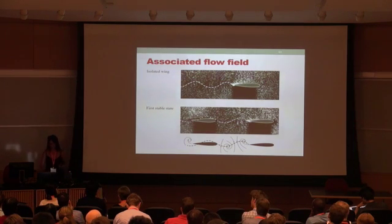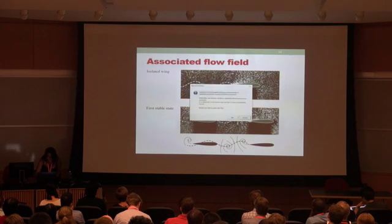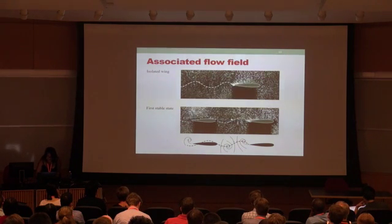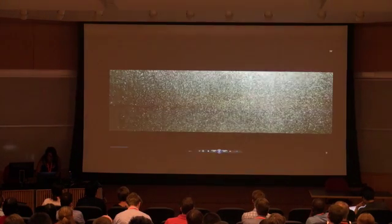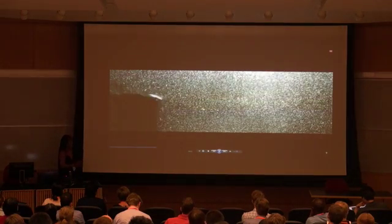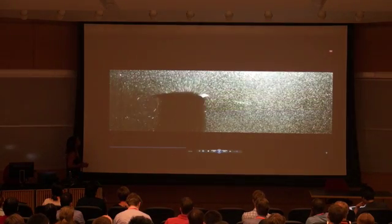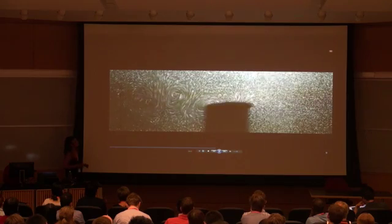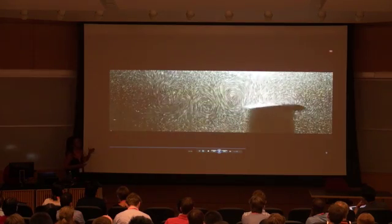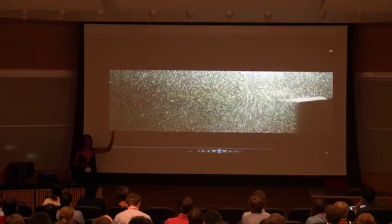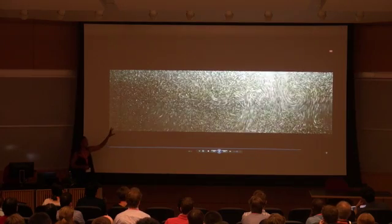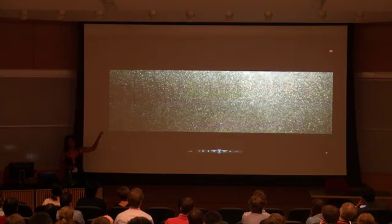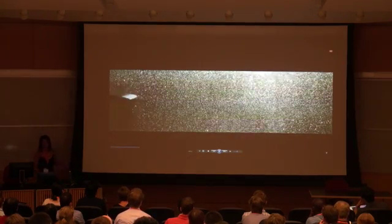So here's a movie of a single wing. If you look at a single wing, the wing is typically leaving a reverse Karman vortex flow. So this is an alternation of counter-rotating vortices. This is a signature of a body that is producing thrust. That's for a single wing.